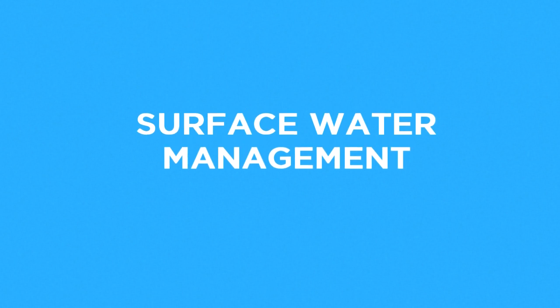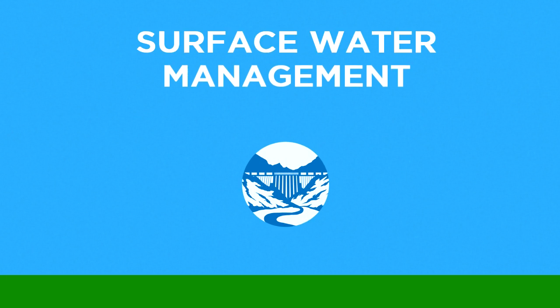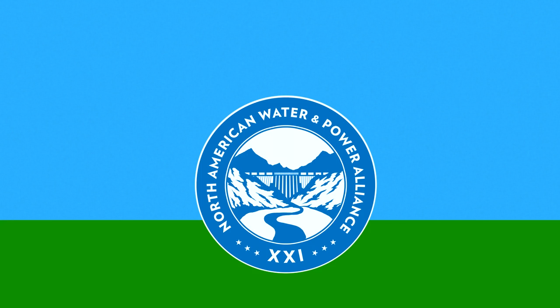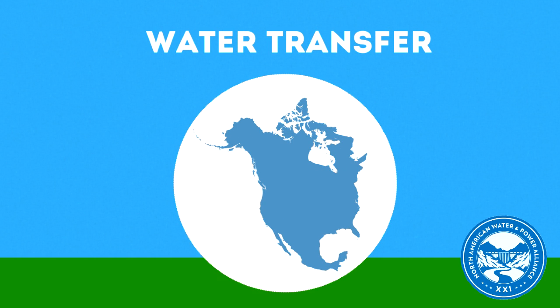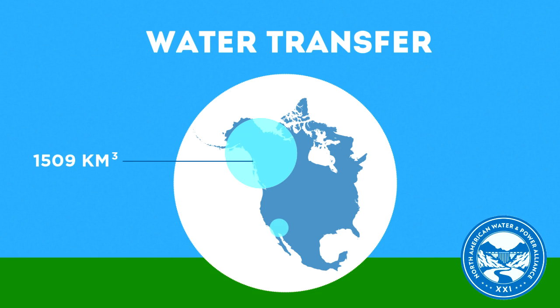A third way to improve the water cycle: surface water management, typified by the North American Water and Power Alliance. In the western half of North America, the distribution of fresh water is wildly uneven, creating a great western discrepancy. Comparing the average annual discharge of rivers of the Northwest versus the Southwest: 1,509 cubic kilometers per year for the North versus 113 for the South — same continent, same coast.